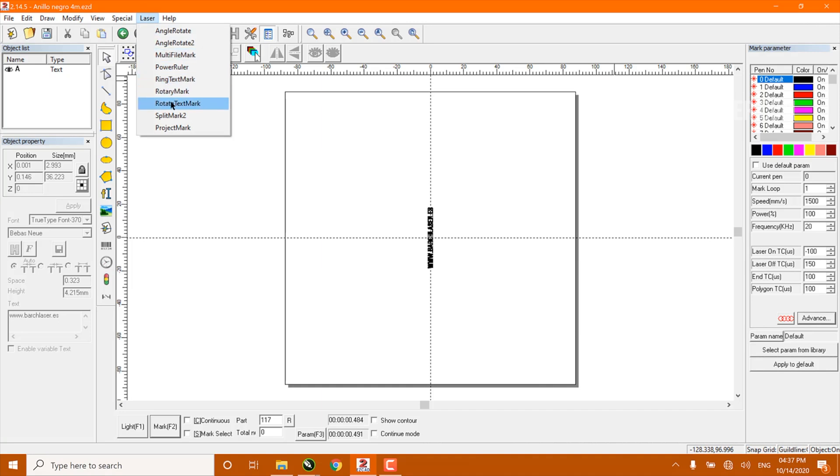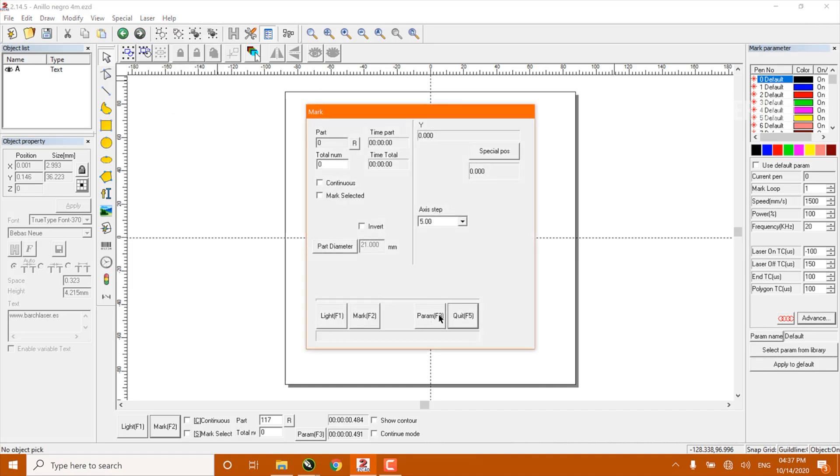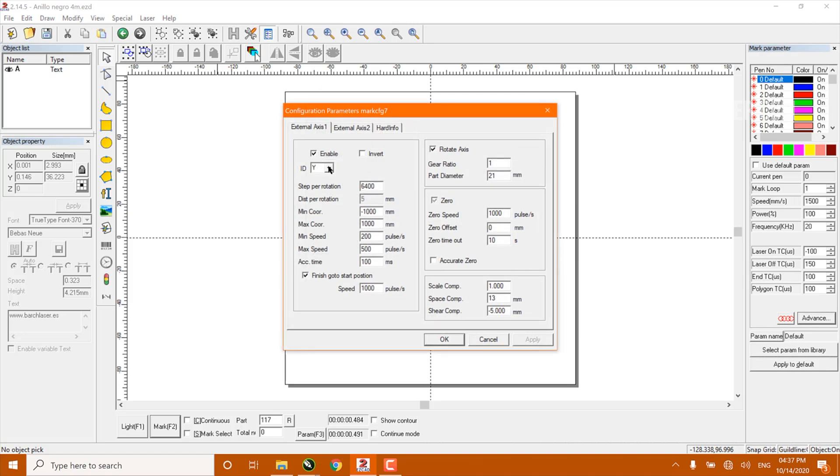Now go to the rotary test mark tool and press F3. Once in the rotary test mark configurations parameter, we can configure the motor steps of the rotary. In this case, I already set up the parameters of this motor.